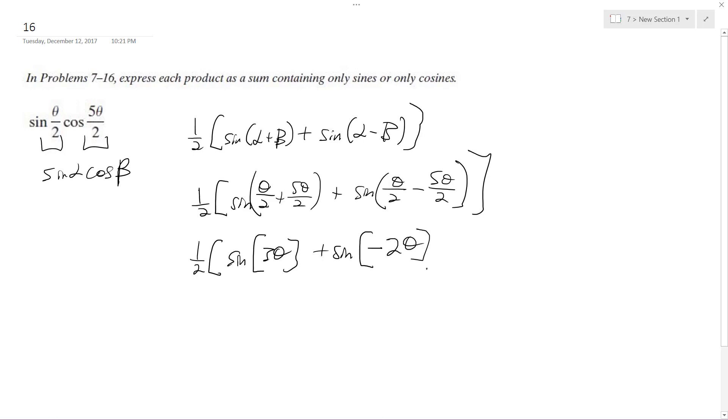Yeah. And what we end up finally, so this negative gets pulled out, this becomes minus, and finally we end up with one half sine 3 theta minus sine 2 theta. And that's it.